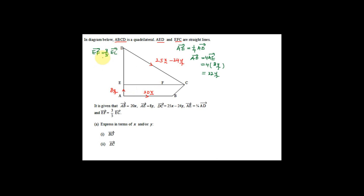EF is somewhere on the diagram. We find the ratio EF to EC is 3:5, so EF is 3 and EC is 5. That means FC must be 2 because the whole EC is 5 and EF is 3. Gather all this information before starting.